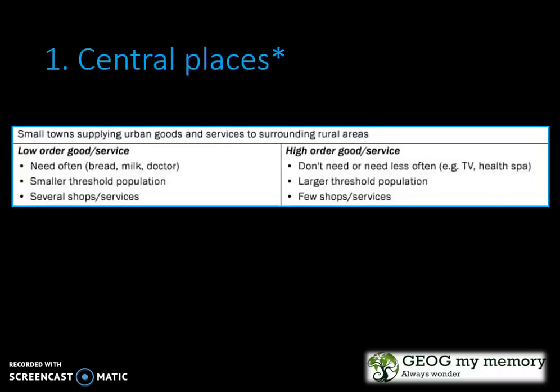Let's look at central places. These are small towns supplying urban goods and services to surrounding rural areas. You have your low order goods and services, which includes things that you need often, such as bread, milk, and healthcare facilities. It includes a smaller threshold population and there are several shops and services. Your high order goods and services includes things that you don't need or need less often, such as a TV. However, they have a larger threshold population with fewer shops or services.